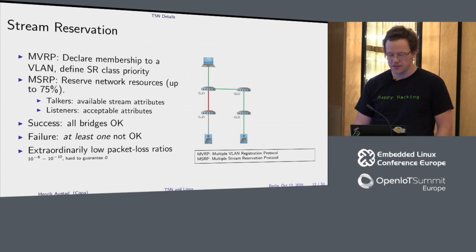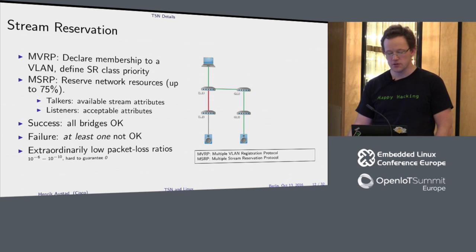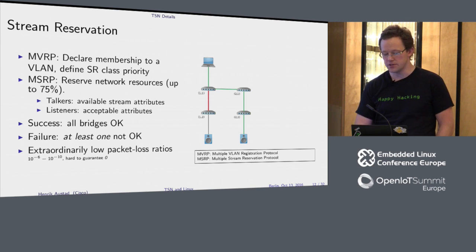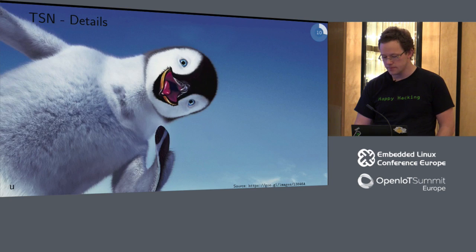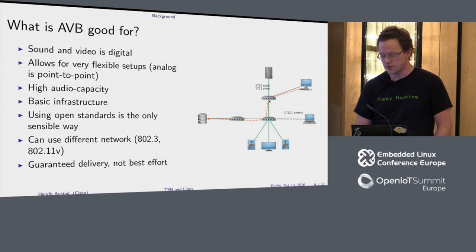A talker will typically announce what attributes it has available, and then a listener will look at them and tell the talker which attributes it will accept — they negotiate and find out what attributes to use for the stream, all done in the MSRP. This gives you extraordinarily low packet loss — somewhere between one in a million and one in ten billion lost frames. Since you've reserved the path, you're pretty much guaranteed not to lose frames due to frame collisions.